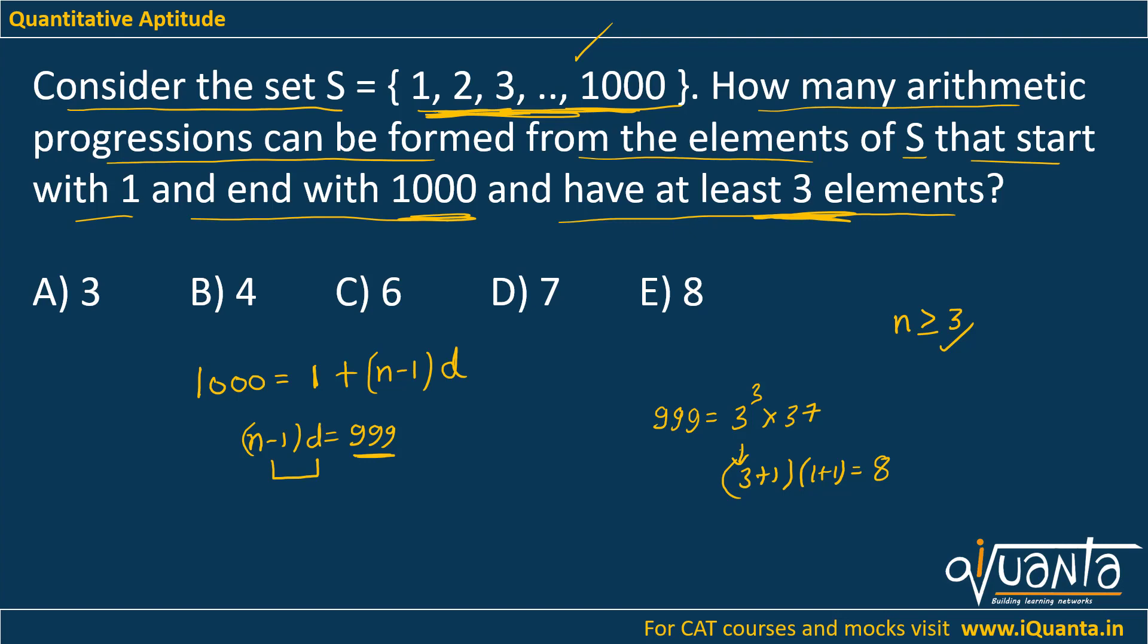So if I write down those factor pairs, they will be like 1 times 999, then 3 times 333, 9 times 111, then 27 times 37. And we can reverse these pairs as well.